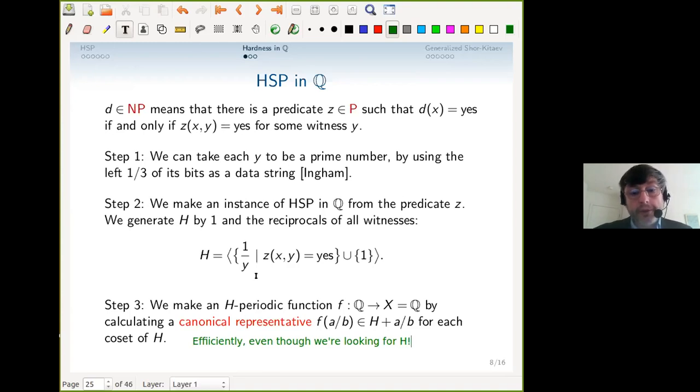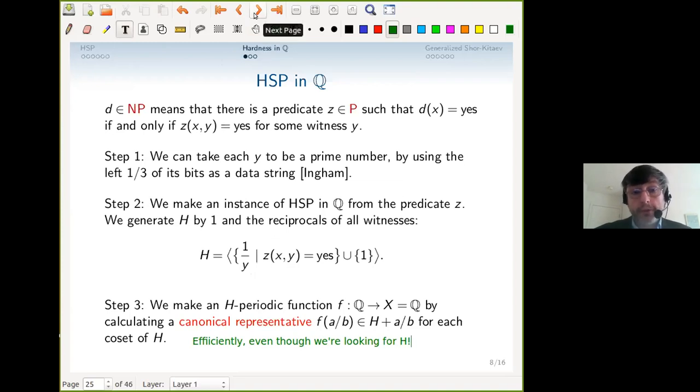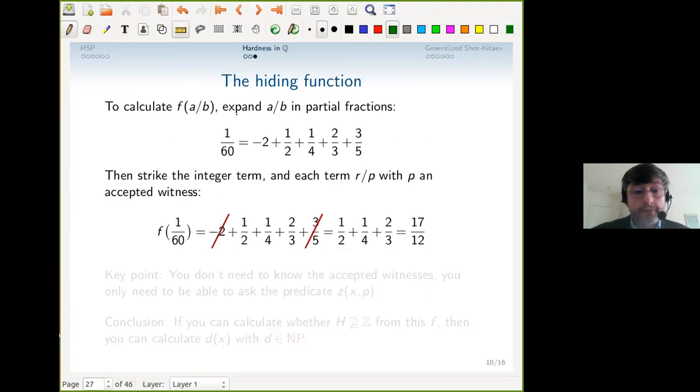The piece of information we have is sort of guess and check—we can ask what's in H, we just don't know what's in H. The basis of the hiding function is partial fractions. Everybody knows about partial fractions in calculus, but it's a fact that you have partial fractions for actual fractions—normal rational numbers—that follow similar rules. Each term has to be a small numerator divided by a prime power, and there's a leftover integer term. There's a completely canonical form, just like for partial fractions in calculus.